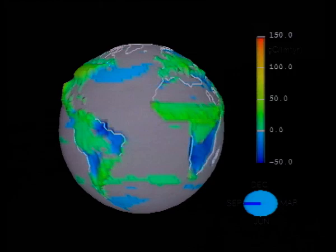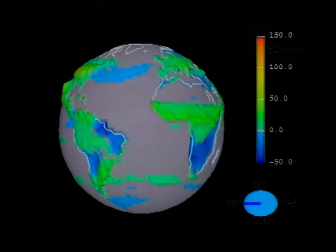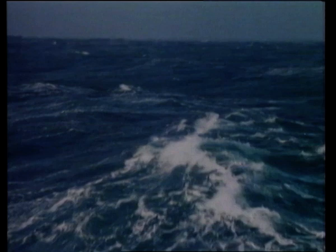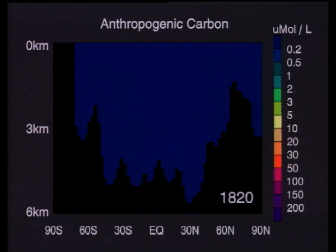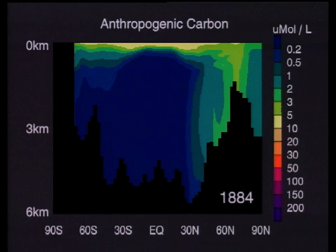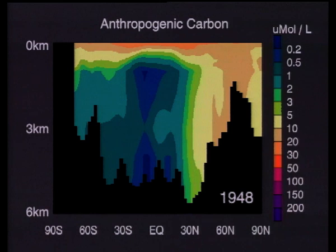The oceans can potentially store large amounts of the carbon dioxide emitted into the atmosphere. However, the process of dissolving CO2 at the ocean surface and transporting it into deeper regions takes several hundred years. This simulation shows the increase of dissolved carbon dioxide in the Atlantic Ocean from 150 years before the present until the year 2099.